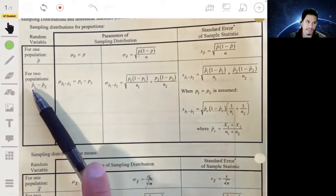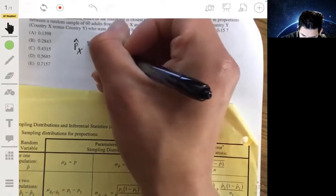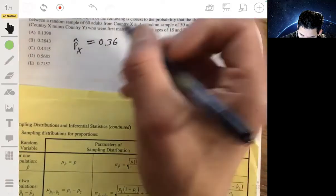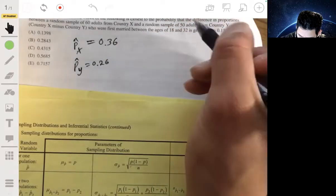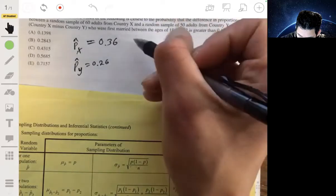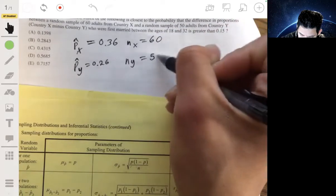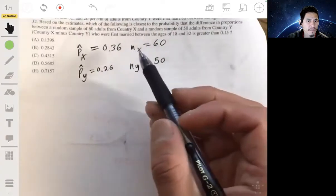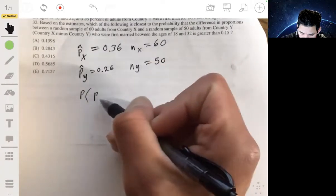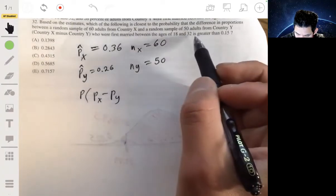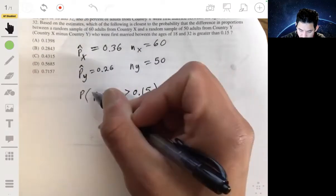So let's have two sample proportions. PX hat is 0.36 and PY hat is 0.26. And the sample sizes: NX would be 60 and NY would be 50. And we're trying to find what's the probability that P sub X minus P sub Y, the difference in those proportions, country X minus country Y is greater than 0.15. So we're trying to find this probability.